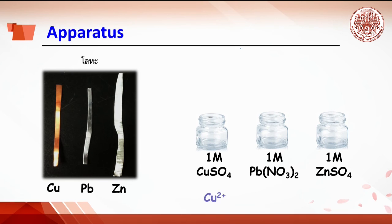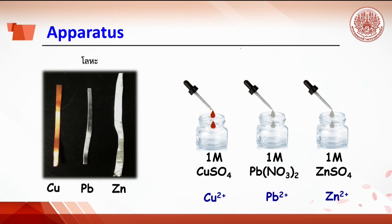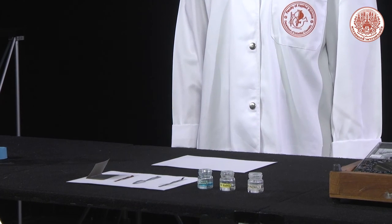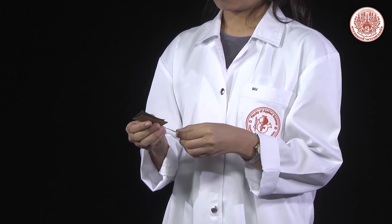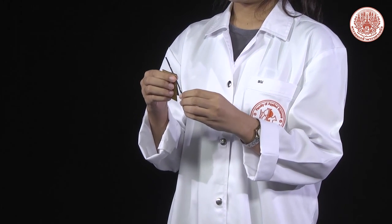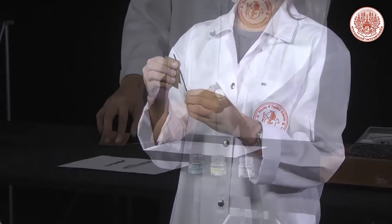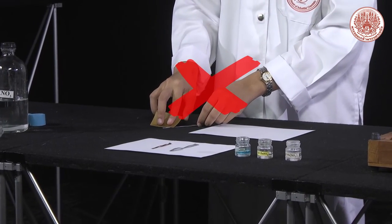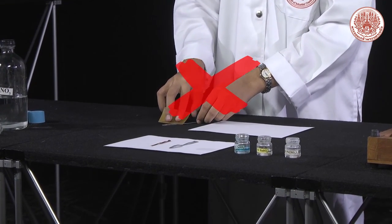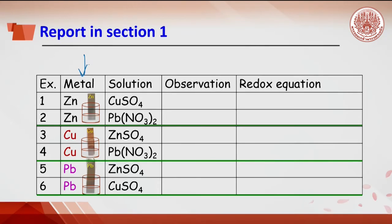Drop copper ions from 1 molar copper sulfate, lead ions from 1 molar lead nitrate, and zinc ions from 1 molar zinc sulfate. Then clean each metal strip with sandpaper to remove oxide or surface film on the metal. Do not scratch the sandpaper on the bench. Place the metal strip into the solution. After 30 seconds, record the observation.